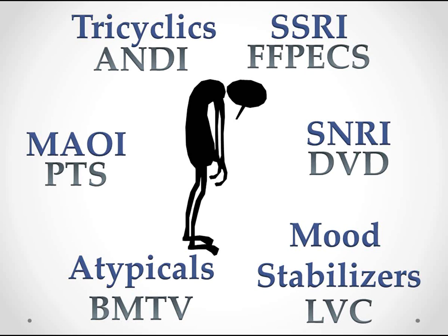And then the mood stabilizers — I don't have a mnemonic for this. LVC: lithium, valproate, and carbamazepine. We could probably add lamotrigine in there too. But we're really only going to talk about four categories today: tricyclics, SSRIs, the MAOIs, and the atypicals.